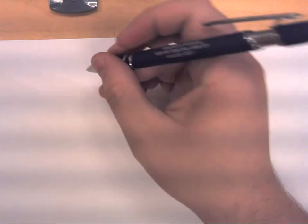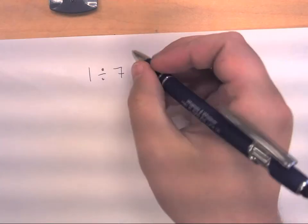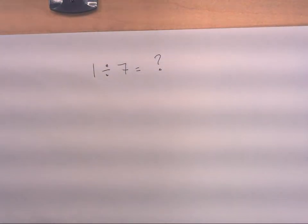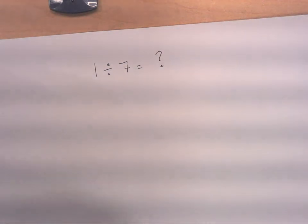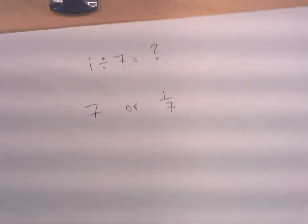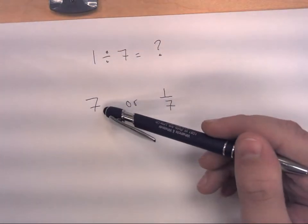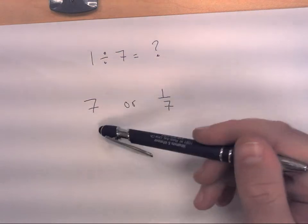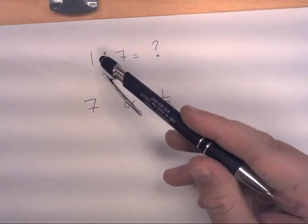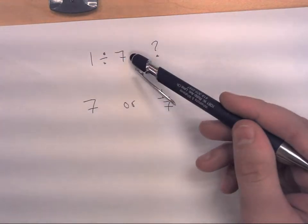One of the questions I asked as students came in today at the very beginning of class was: one divided by seven equals what? The two most common answers were seven or one-seventh. After some investigating and having students explain their thinking, we found out that some students were thinking one divided by seven is the same as seven divided by one, so that must be seven.